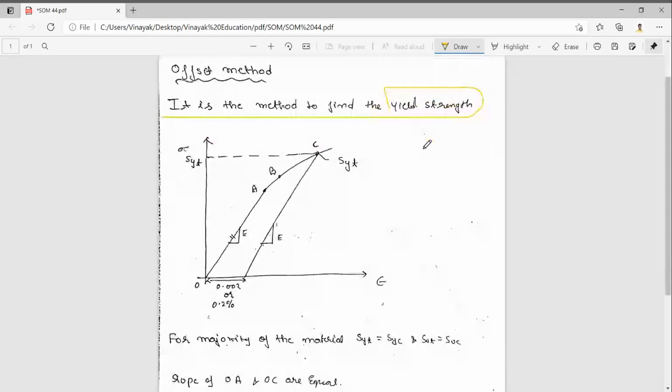We know the stress-strain diagram. This is the stress-strain diagram, generally a curve. This is up to the proportionality limit and this is the elastic limit. After the elastic limit, we will go to some yield point. We don't know till where we should go. That we will see from the strain axis.